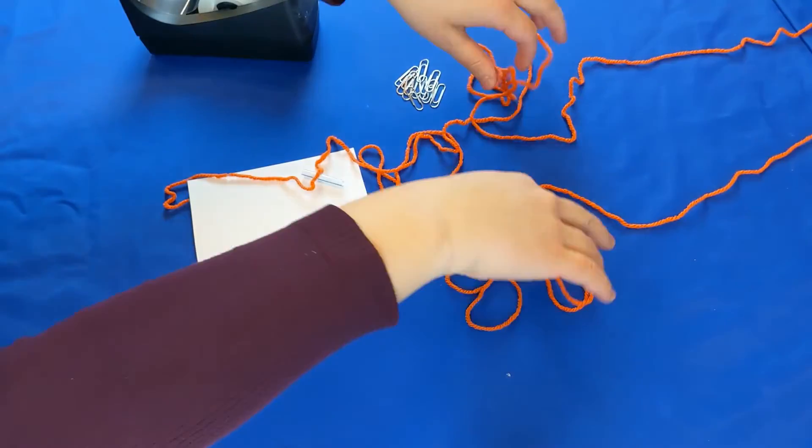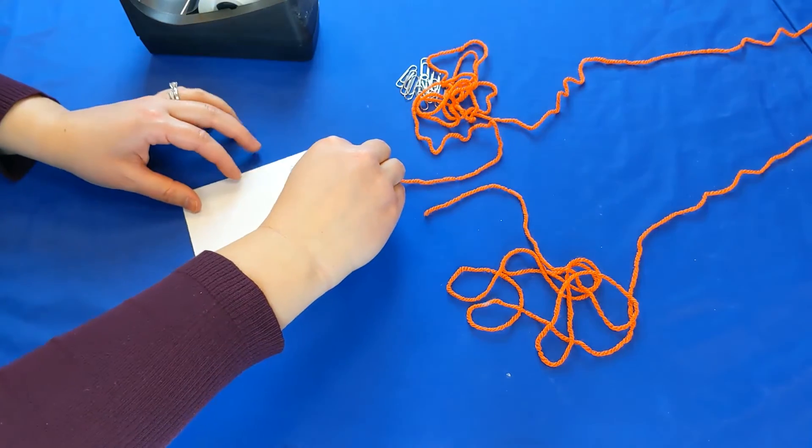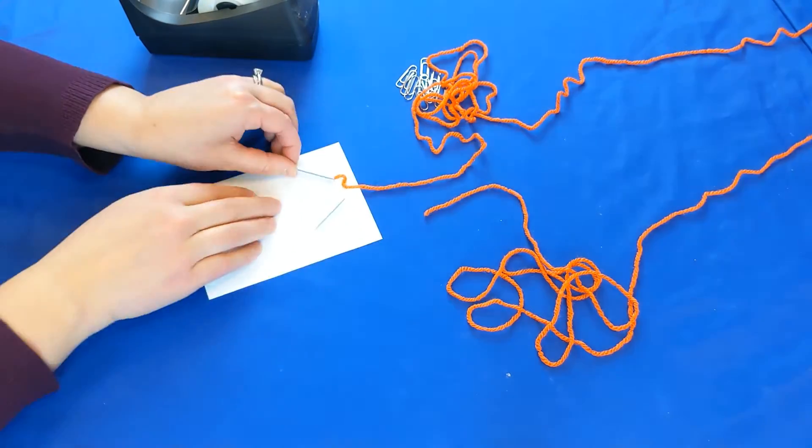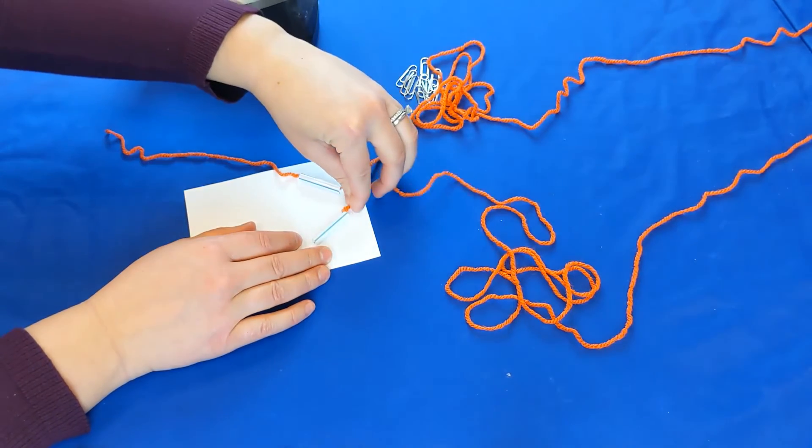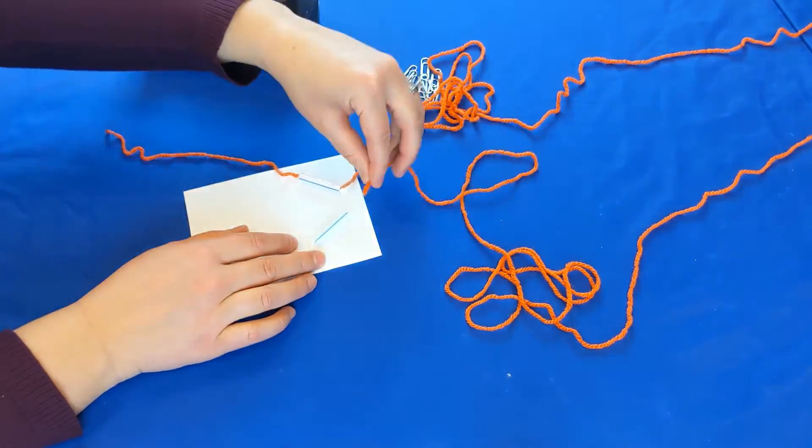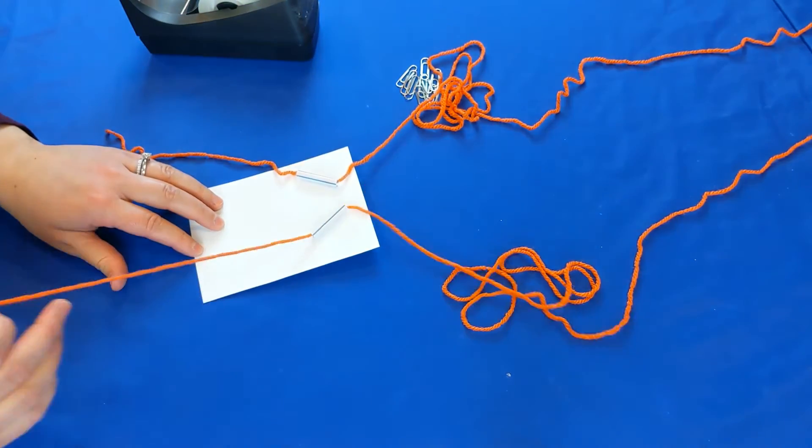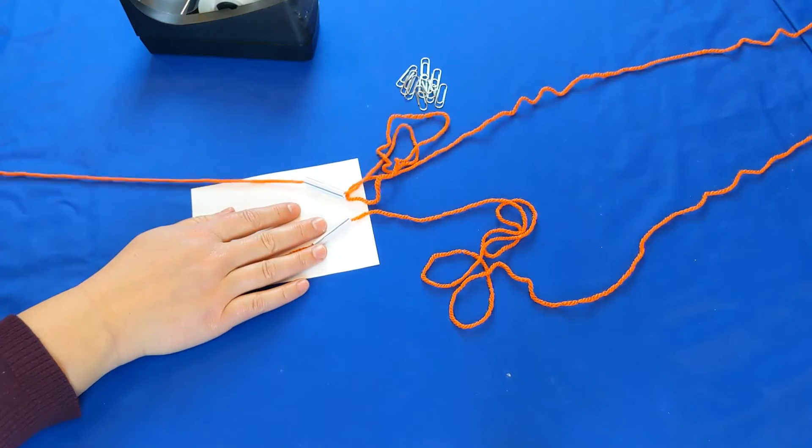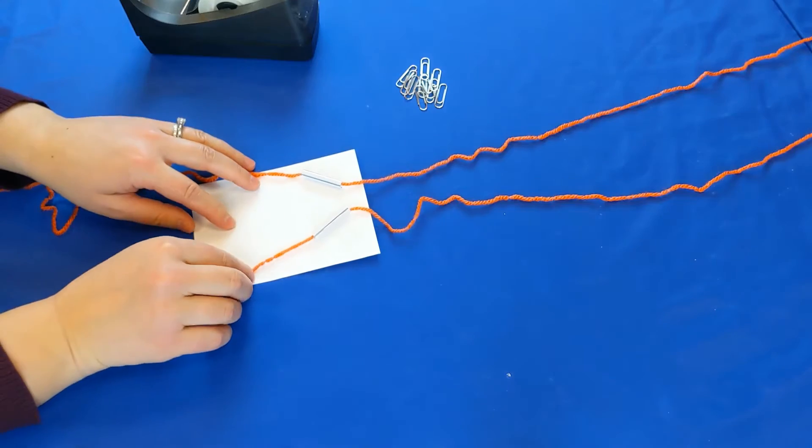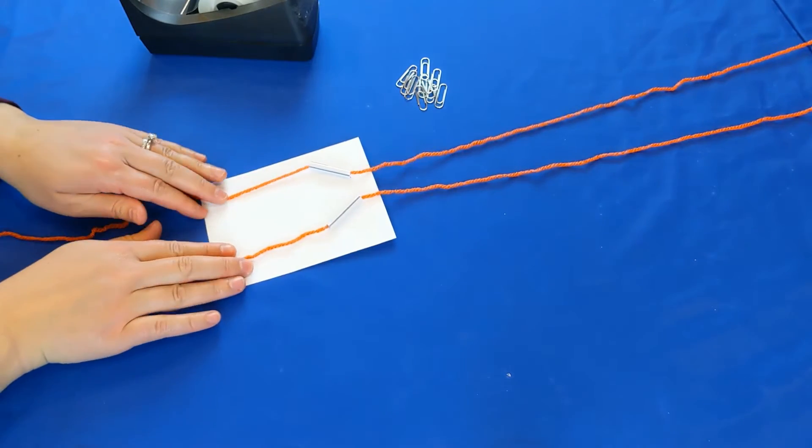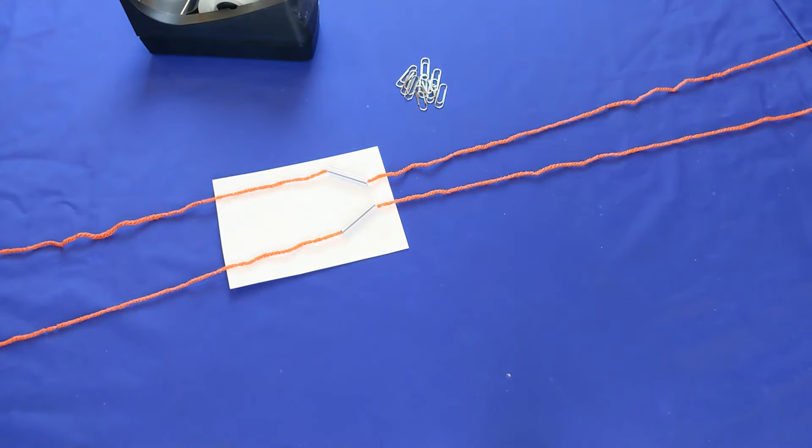We have our string here and you're going to take one end of your string and slide it through one straw. Take the other end of the string and slide it through the second straw. Be careful to make sure that you don't get the strings crossed while you're doing that. Now pull all the extra string out here. Now you can see we've got the string pulled through the straws on our cardstock.